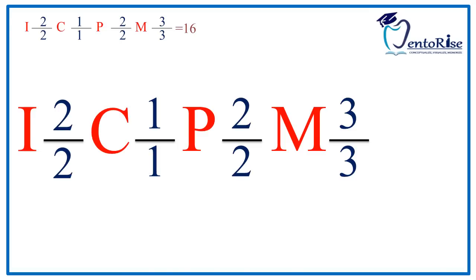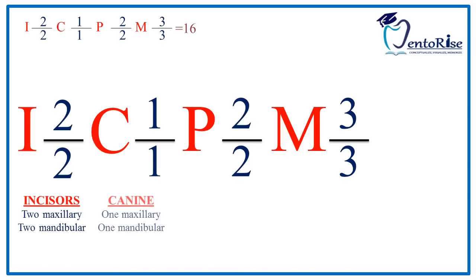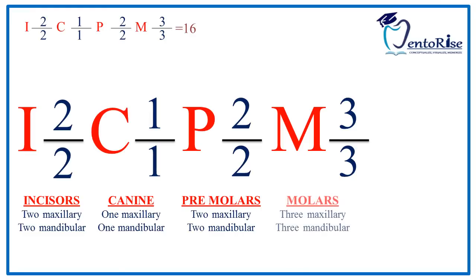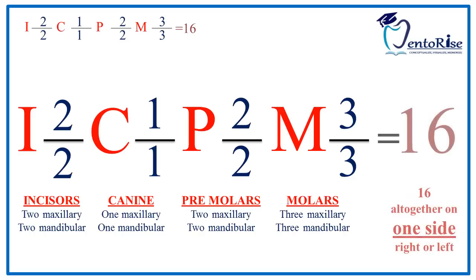Thus, the formula is read as: incisors — 2 maxillary and 2 mandibular; canines — 1 maxillary and 1 mandibular; premolars — 2 maxillary and 2 mandibular; molars — 3 maxillary and 3 mandibular. Or 16 altogether on one side, right or left.